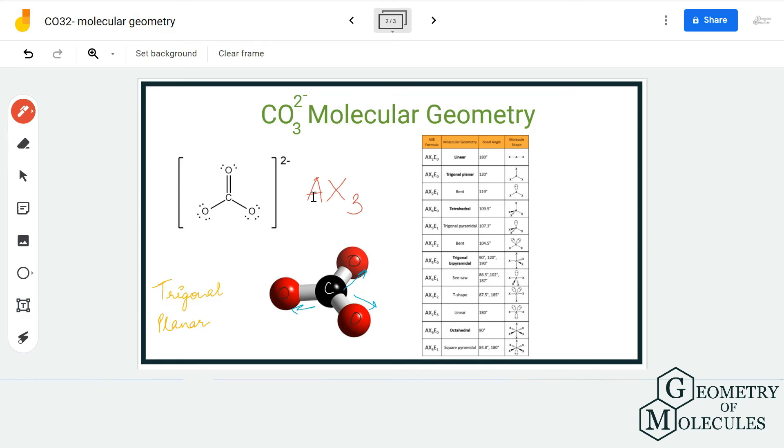We do not have any lone pairs, so if you look up here we have AX3, which corresponds to trigonal planar. Hence, CO3 2- also has a trigonal planar molecular geometry.